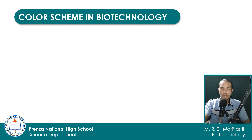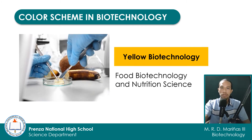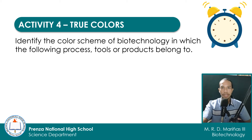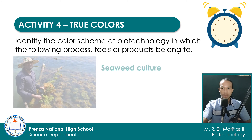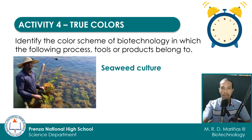Yellow biotechnology focuses on food biotechnology and nutrition science, and how we can improve the food that we eat every day. To help you master the skill of classifying different activities and processes into the different color schemes of biotechnology, let us have this activity entitled True Colors. You are asked to identify the color scheme of each of the processes and activities presented in this slide. You are given only 5 seconds to think for the answer. You may write your answer on the space provided in your activity sheet. Let us start with seaweed culture.